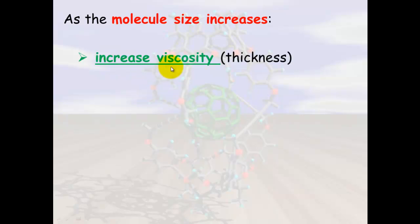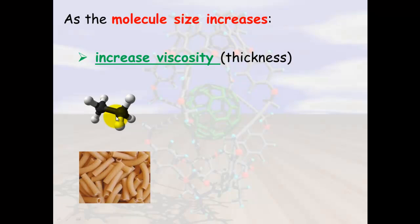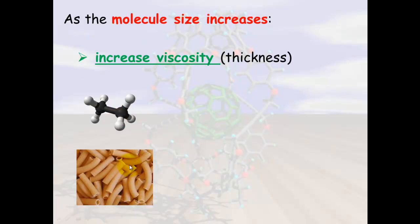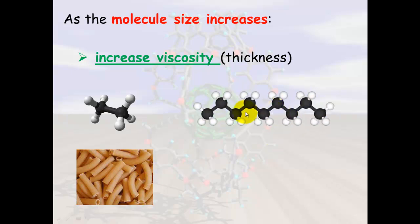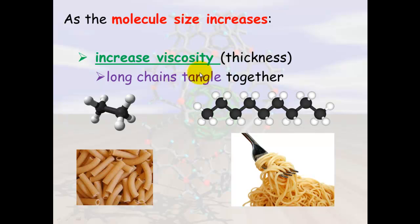The other thing that increases with molecule size is viscosity, which is the thickness. You can talk about liquids being viscous, like honey, compared to water, which is non-viscous. If we look at a small molecule like ethane, think of it as short pasta — short strands don't tangle up very easily. But a long hydrocarbon is more like spaghetti; they can get tangled up. These long chains tangling is what causes viscosity, and it's also partially responsible for volatility.